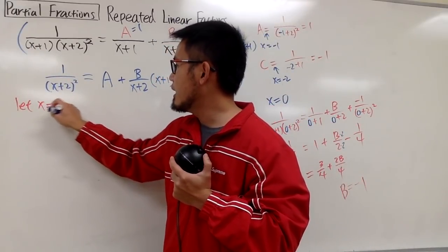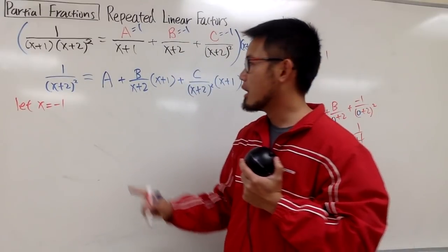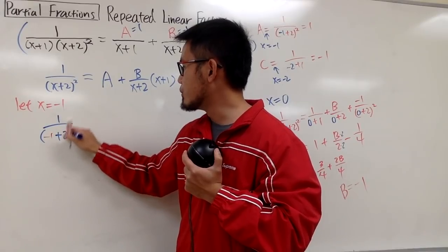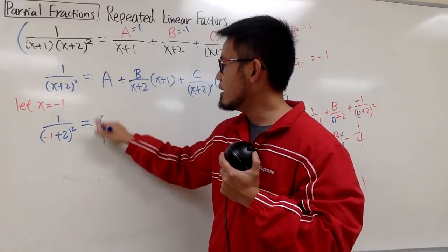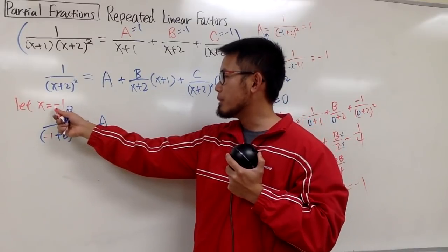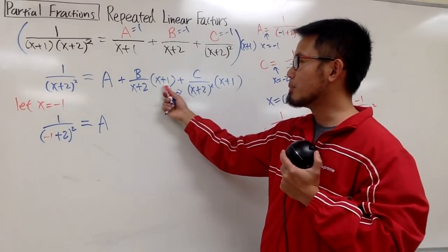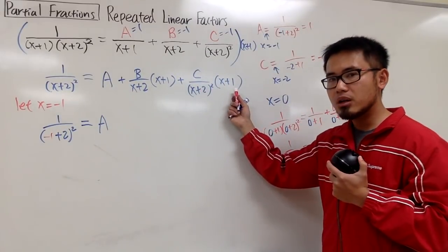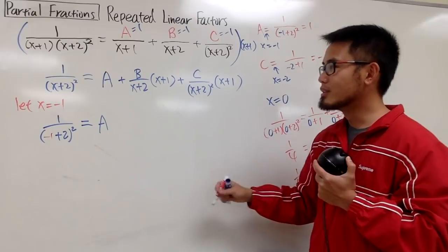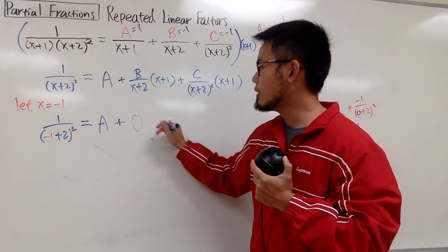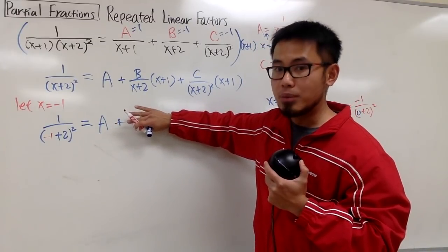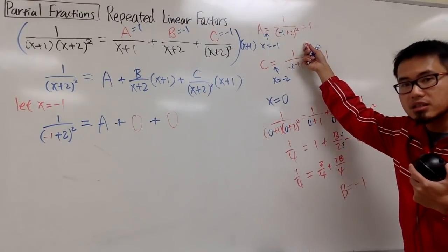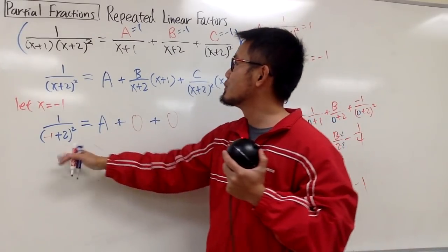Well, I will just do 1 over negative 1 plus 2 squared and A is right here. And check this out. When I plug in negative 1 into here, negative 1 plus 1 is 0, that kills this term. Plug in negative 1 into here, negative 1 plus 1 is 0, that kills this term. So we just have plus 0 plus 0. So the b and c, they don't matter. And I just have A is equal to that. And that's exactly what we did earlier, isn't it? So you get A is equal to 1. And hopefully you can see it.